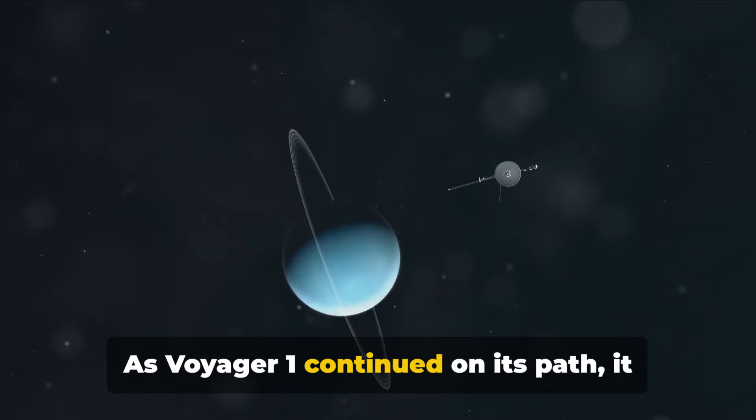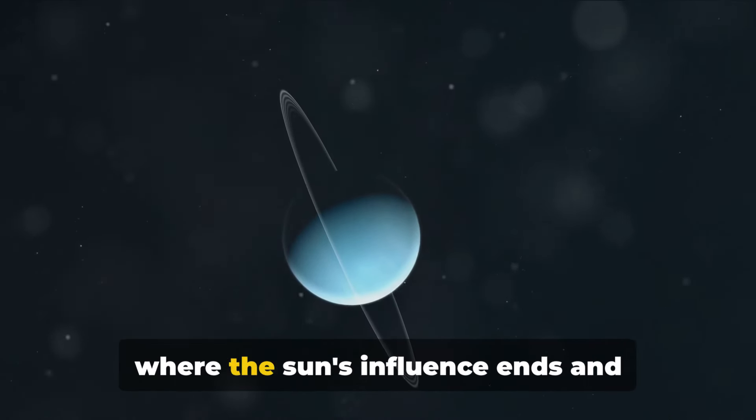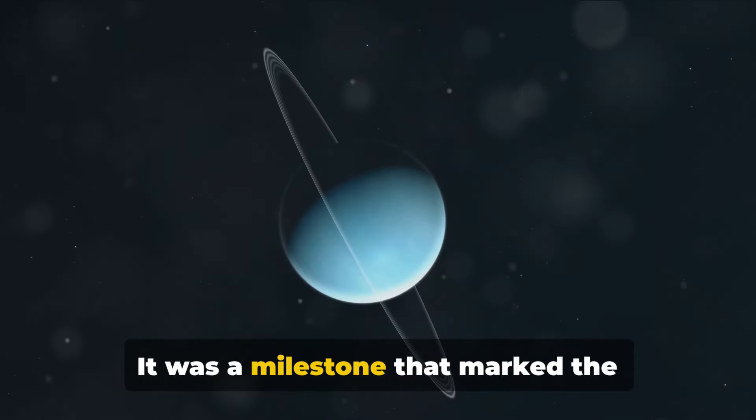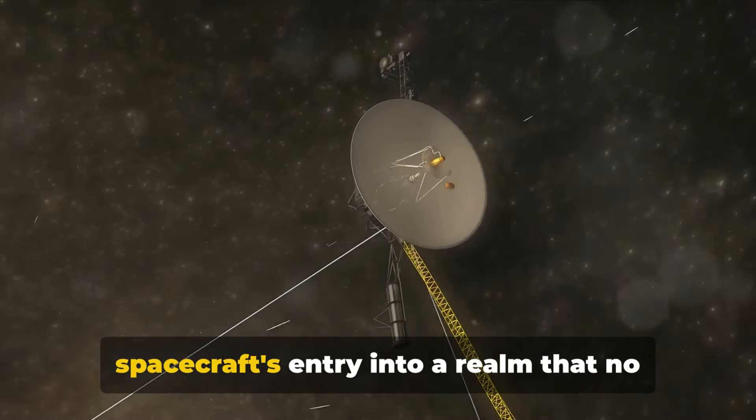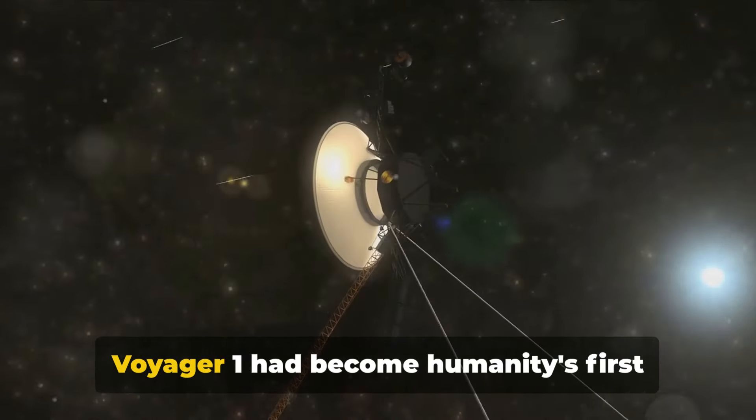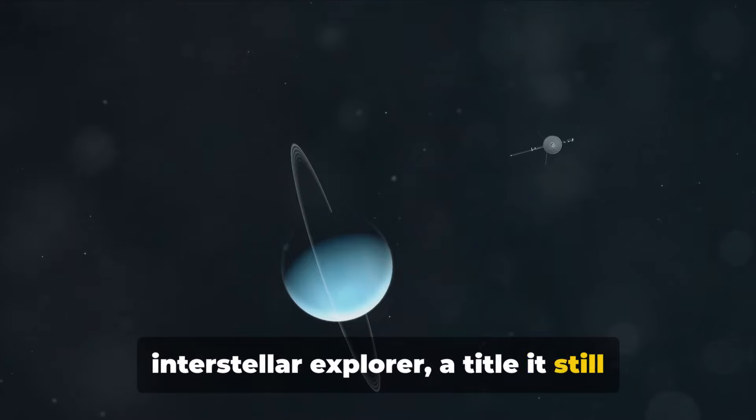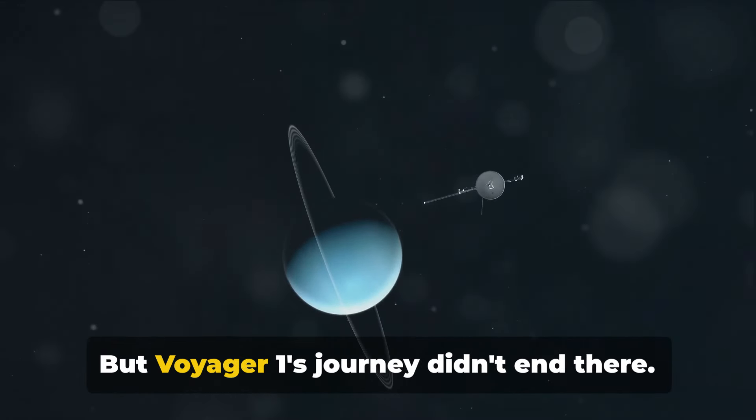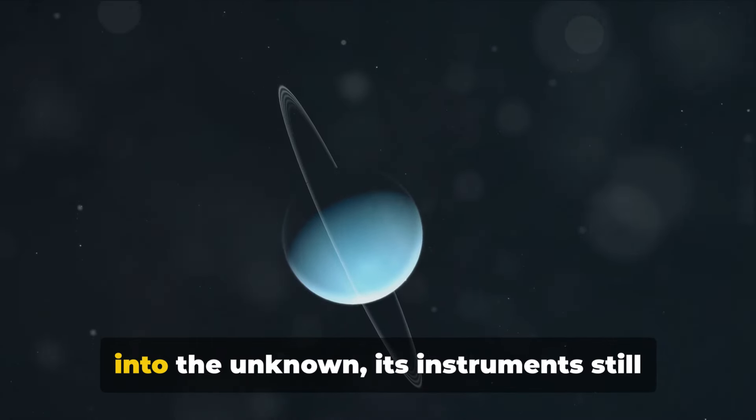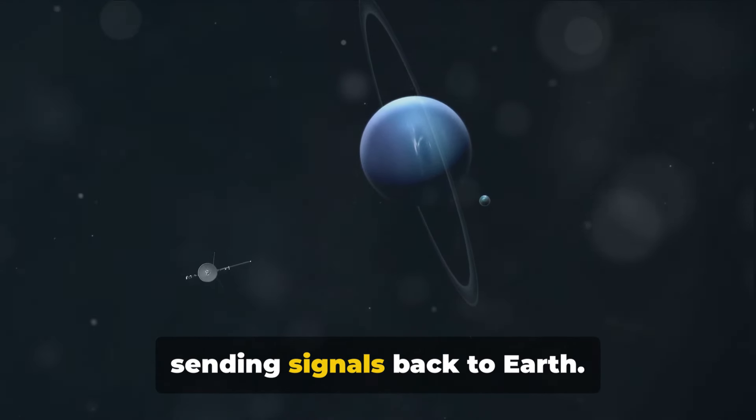As Voyager 1 continued on its path, it encountered the heliopause, the boundary where the sun's influence ends and interstellar space begins. It was a milestone that marked the spacecraft's entry into a realm that no man-made object had ever reached before. Voyager 1 had become humanity's first interstellar explorer, a title it still holds to this day. But Voyager 1's journey didn't end there. The spacecraft has continued to journey into the unknown, its instruments still functioning, still gathering data, still sending signals back to Earth.